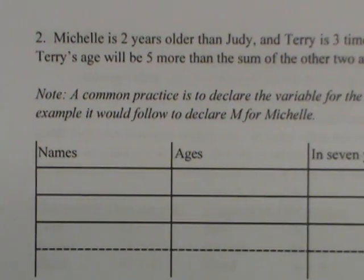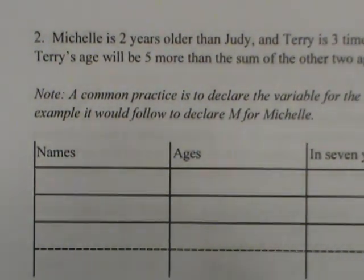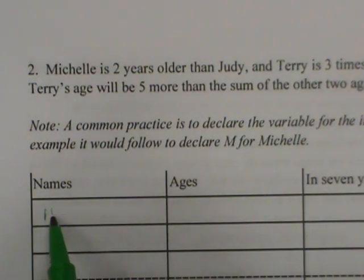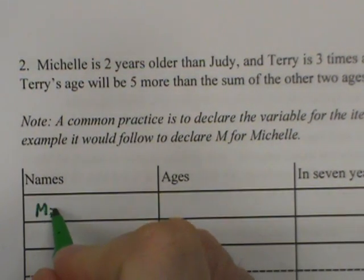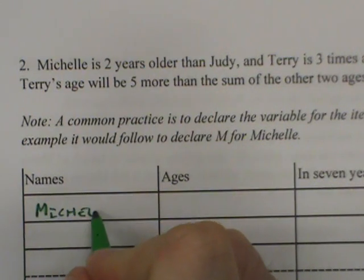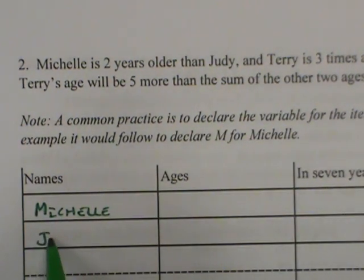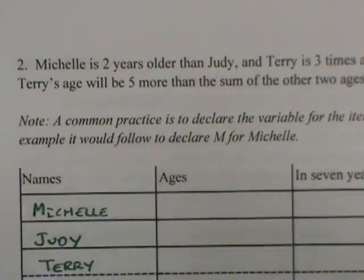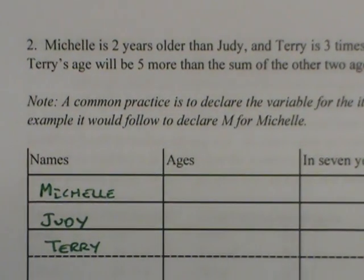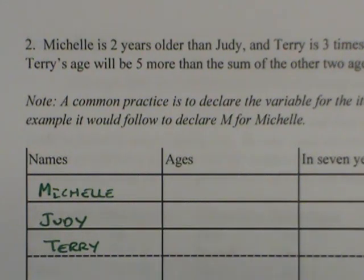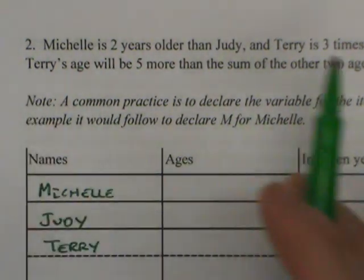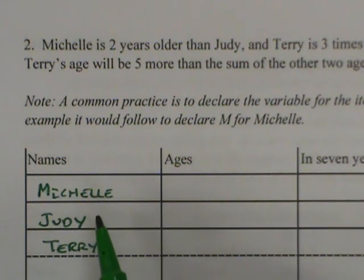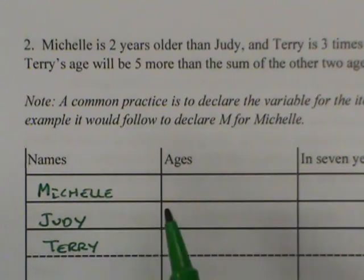When you have three people, the first time you read through, you want to write the names down — Michelle, Judy, and Terry. When you have three people, as a general rule, you want to see who is referred to most often. The best way to do that is to tally as you read through. The person referred to most often is where you start — that's the variable you should start with.